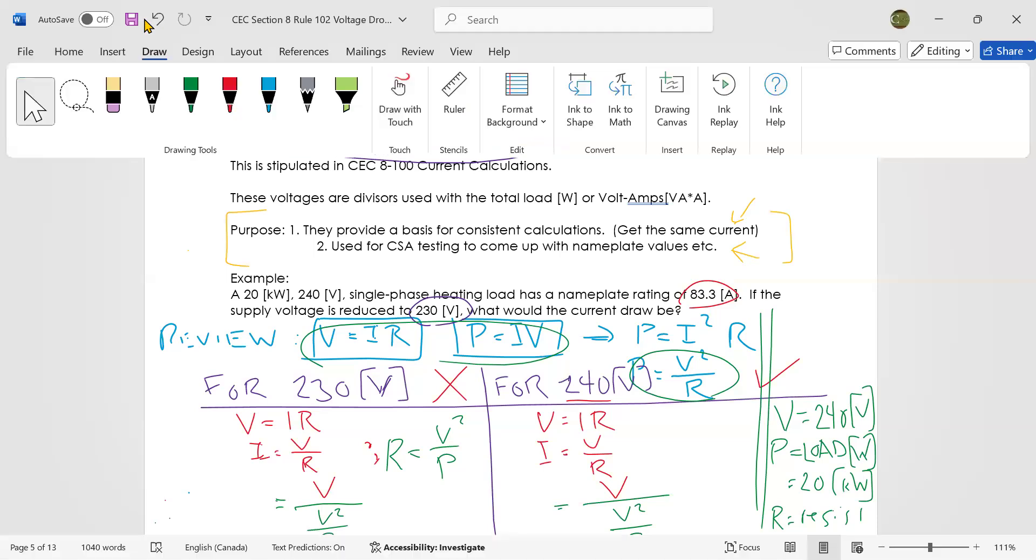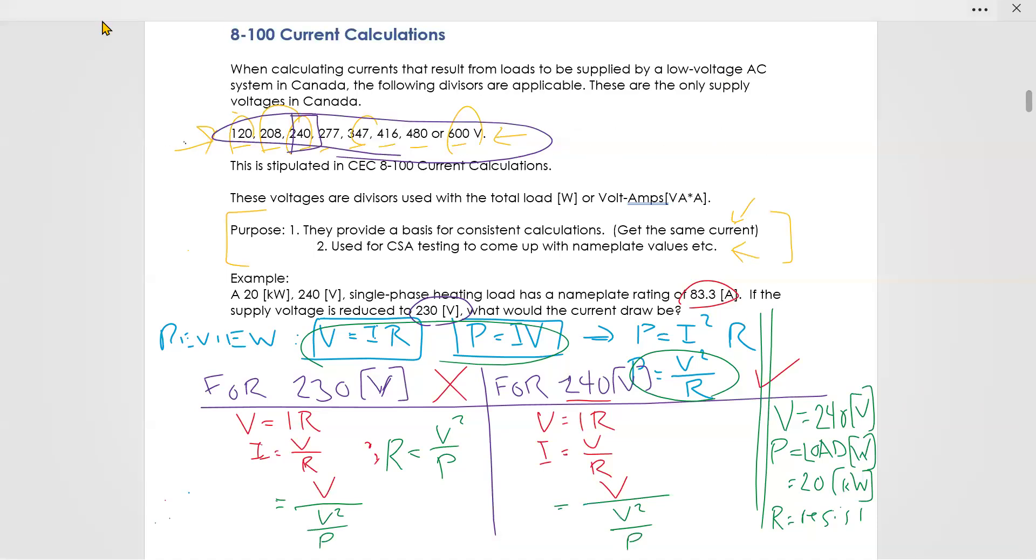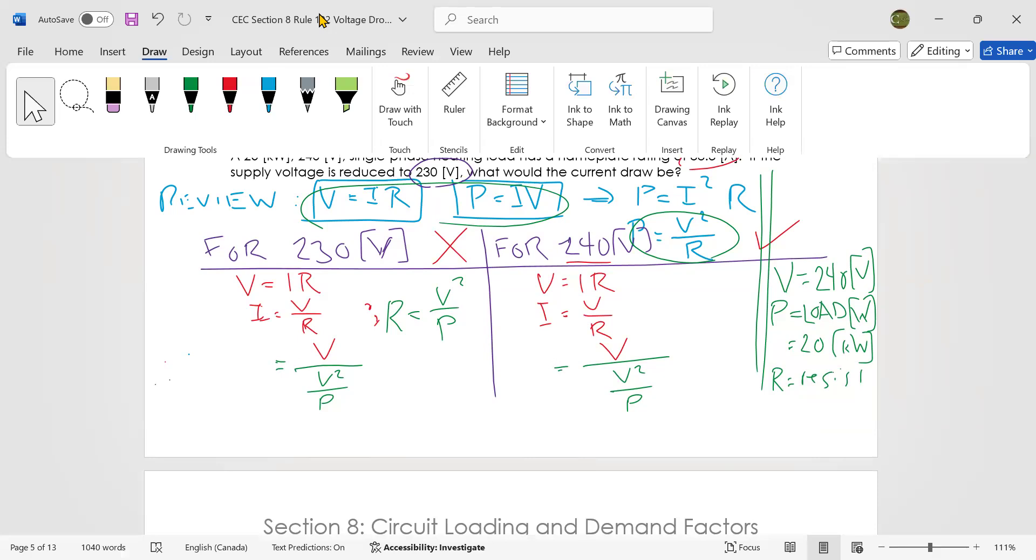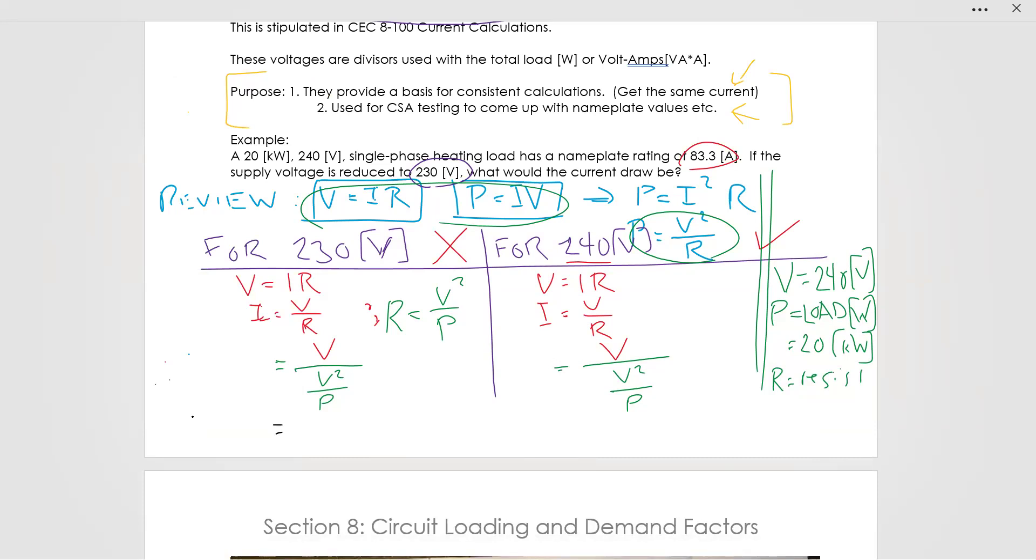Let me scroll a bit so we can do our calculation. Let me give myself more room on the screen. Okay, so in this case, the case where we're doing it wrong, once we substitute in and solve this, we would get 230 volts over (240² / 20,000 watts).